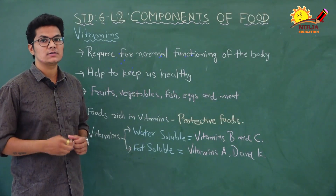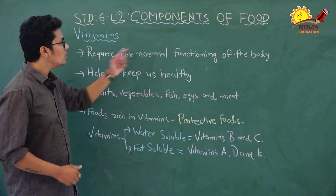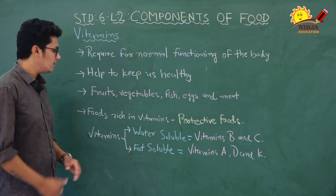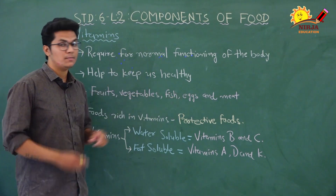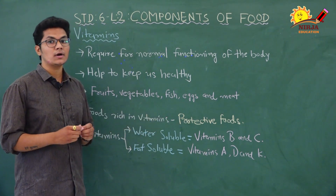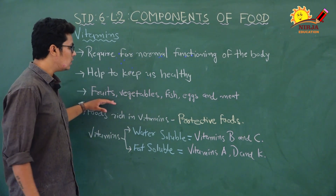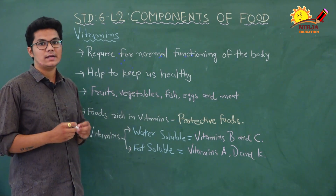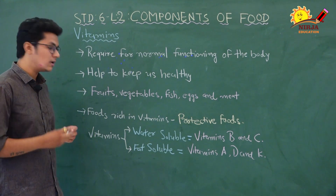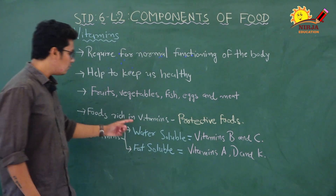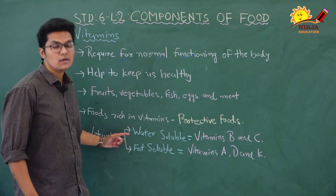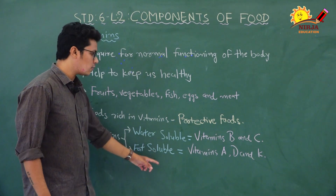Vitamins are essential nutrients required in small quantities for normal functioning of the body. They do not provide energy, but help to keep us healthy. Fruits, vegetables, fish, eggs, and meat are rich sources of vitamins. Foods rich in vitamins are called protective foods. There are two types of vitamins: water-soluble and fat-soluble. Vitamins soluble in water are water-soluble; those soluble in fats are fat-soluble.